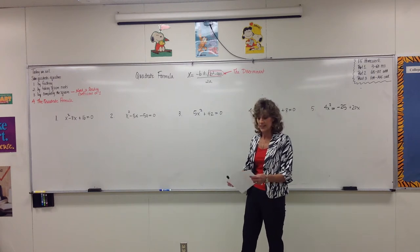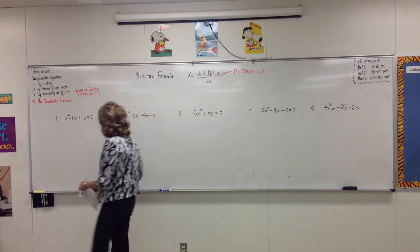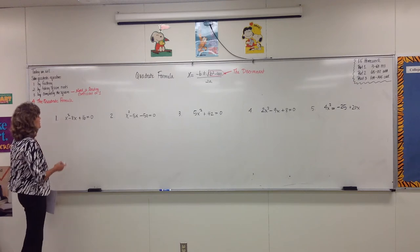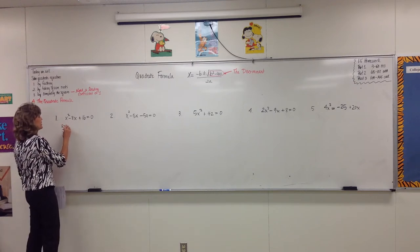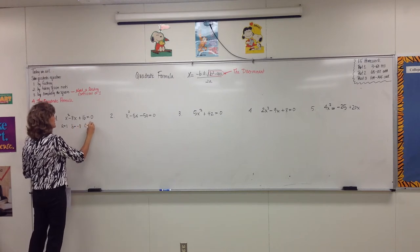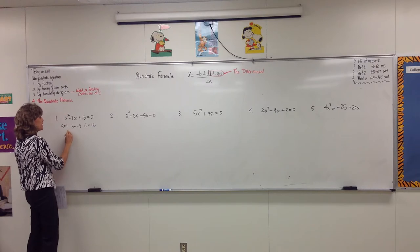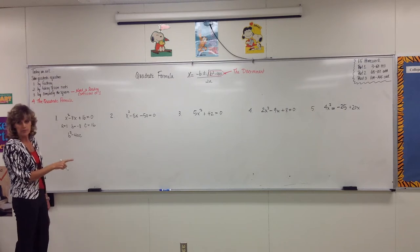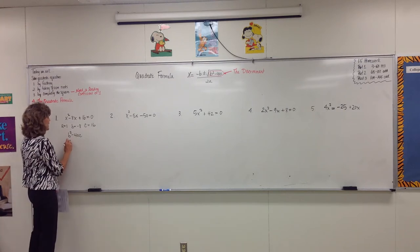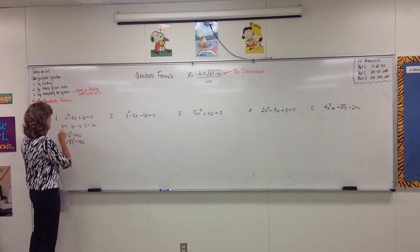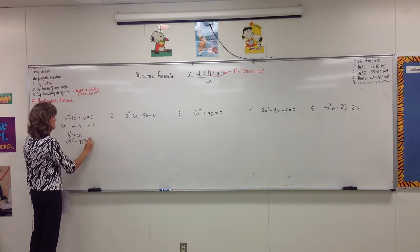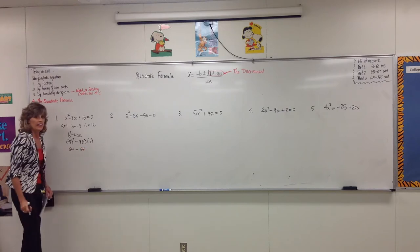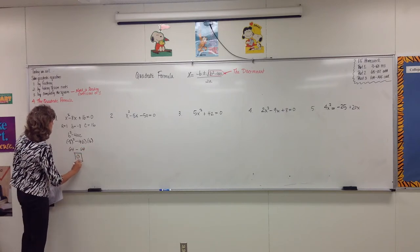Let's look at some examples. On the first problem, I first want to calculate the discriminant — don't put a radical over it or you'll miss it. Here, a is 1, b is negative 8, and c is 16. The discriminant is b squared minus 4ac: negative 8 squared minus 4 times 1 times 16 gives us 64 minus 64. So the discriminant is zero.